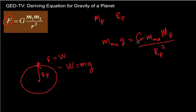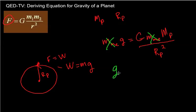This is a pretty easy derivation because all you do is cancel out the mass of me. The mass of me doesn't matter, which is important because we wouldn't expect gravity on the planet to be affected by different people with different masses. So the equation we have is: the surface gravity on any planet equals big G times the mass of the planet divided by the radius of the planet squared.